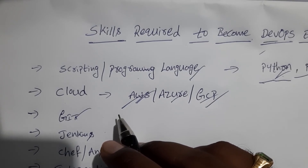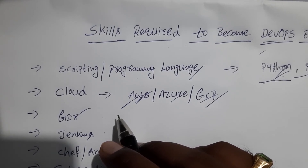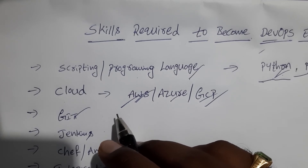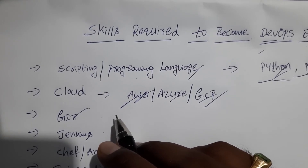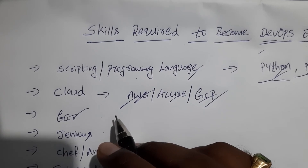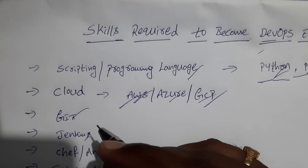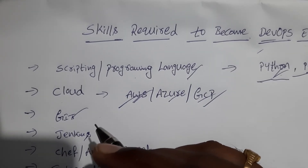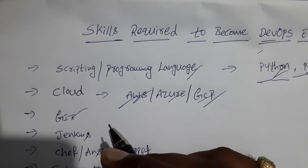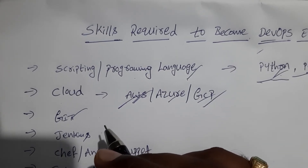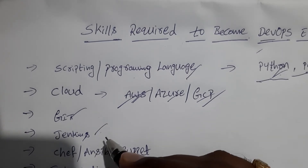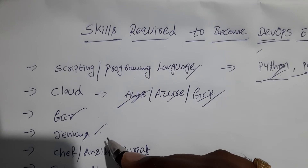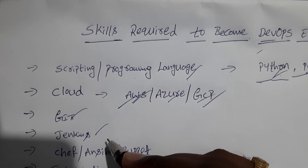Regardless of whether you write code that only you will see, or work as part of a team, Git will be useful for you. It is essentially your repository — it contains all the project files and the entire revision history.